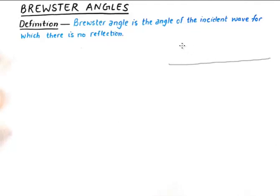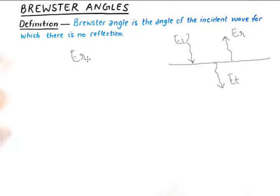For example, if some wave is incident and it goes from one medium to the other, we know that some part of the wave will come back and some part of it will be transmitted. So if this is the transmitted wave and this is the incident wave, this will be the reflected portion of the wave. The ratio of Er upon Ei is known as reflection coefficient, which is a very important parameter. It is also used in transmission lines and in the calculation of standing wave ratios and so forth.